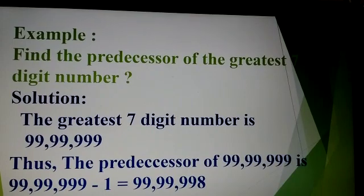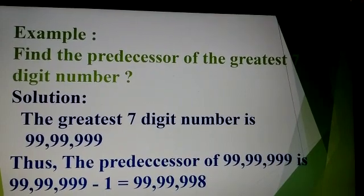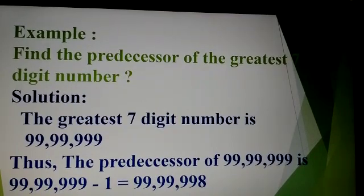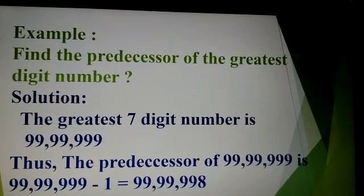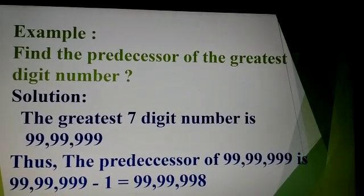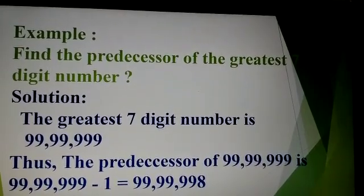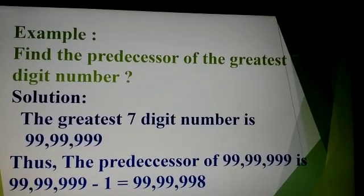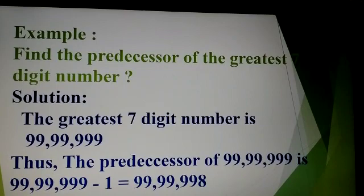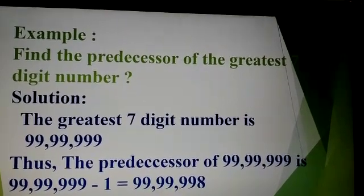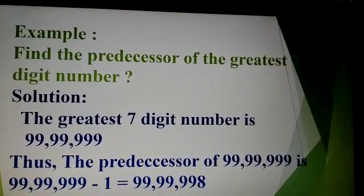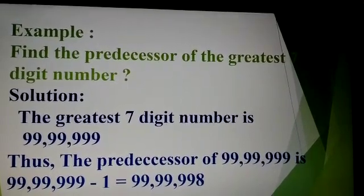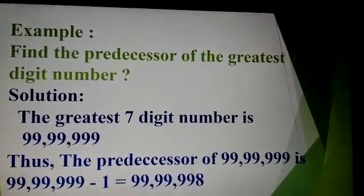Let us take an example. Find the predecessor of the greatest 7-digit number. Solution: the greatest 7-digit number is 99,99,999. Thus, the predecessor of 99,99,999 is 99,99,999 minus 1, which is equal to 99,99,998.